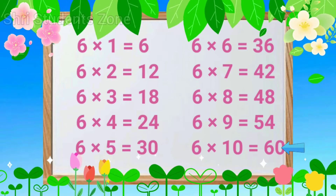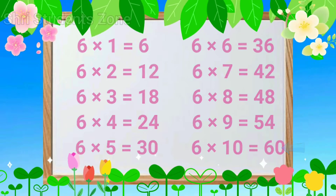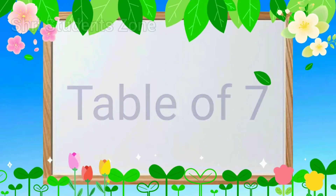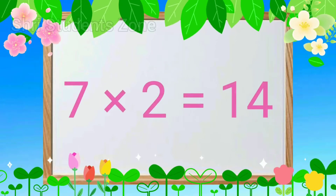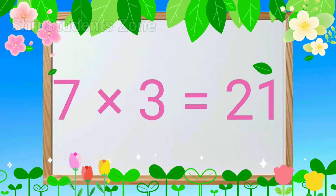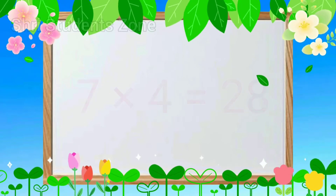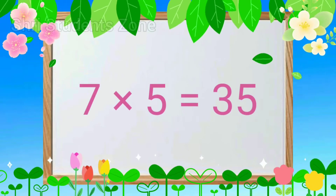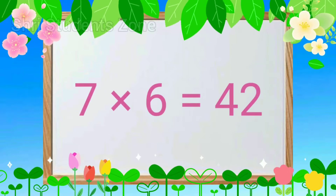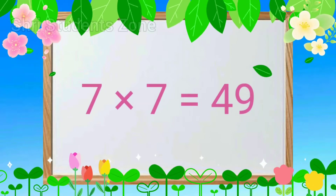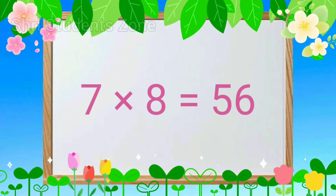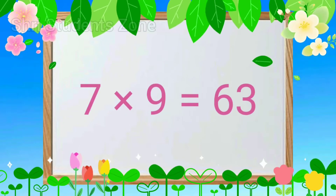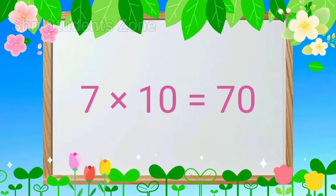Table of 7. 7 1s are 7, 7 2s are 14, 7 3s are 21, 7 4s are 28, 7 5s are 35, 7 6s are 42, 7 7s are 49, 7 8s are 56, 7 9s are 63, 7 10s are 70.